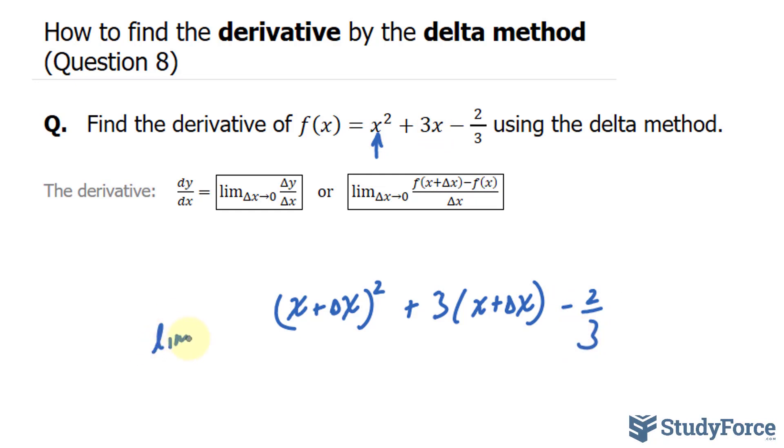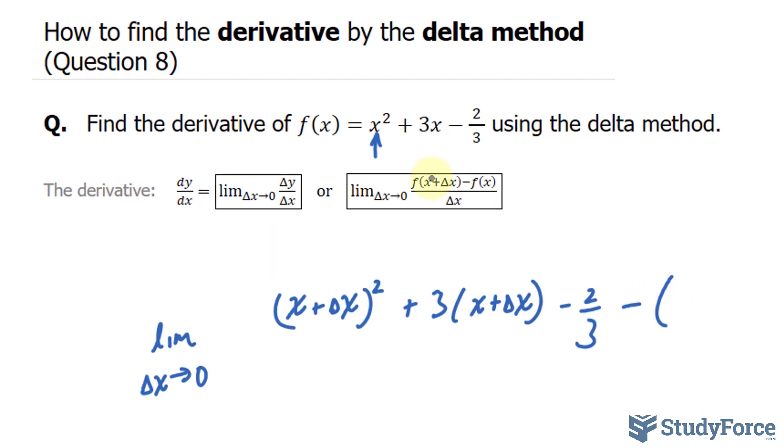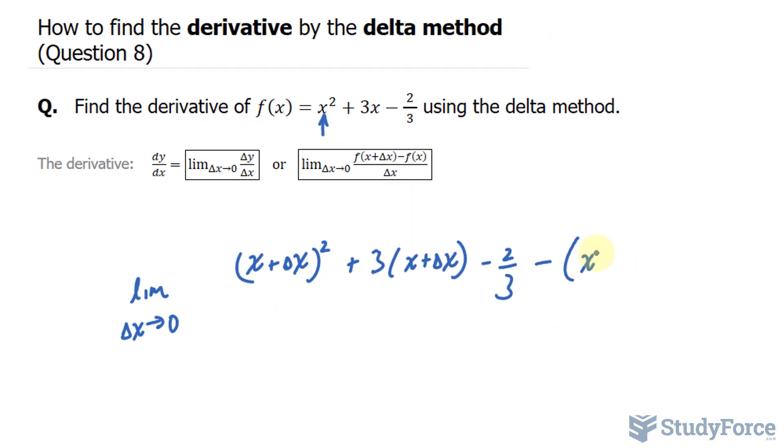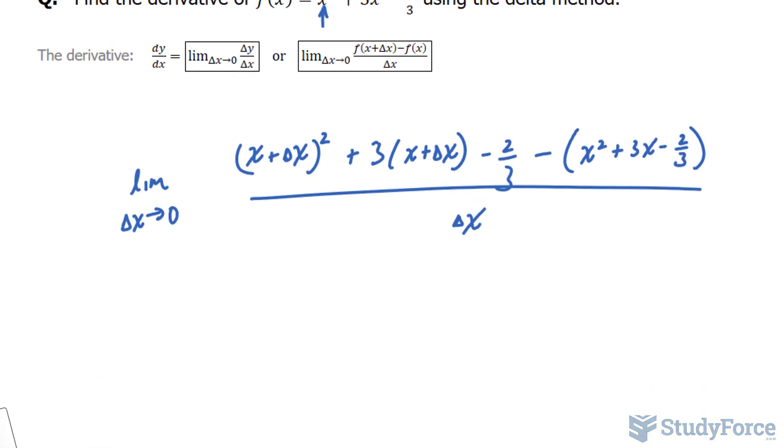Now our limit is as delta x approaches 0. And for this part, we simply subtract our function. So minus, and then since we have 3 terms here, we want to place it in parentheses: x squared plus 3x minus 2 over 3, all over delta x. So this is the limit that we want to take, but we can't take the limit as delta x approaches 0 now, because then we'll have a 0 in the denominator, and that's not allowed.